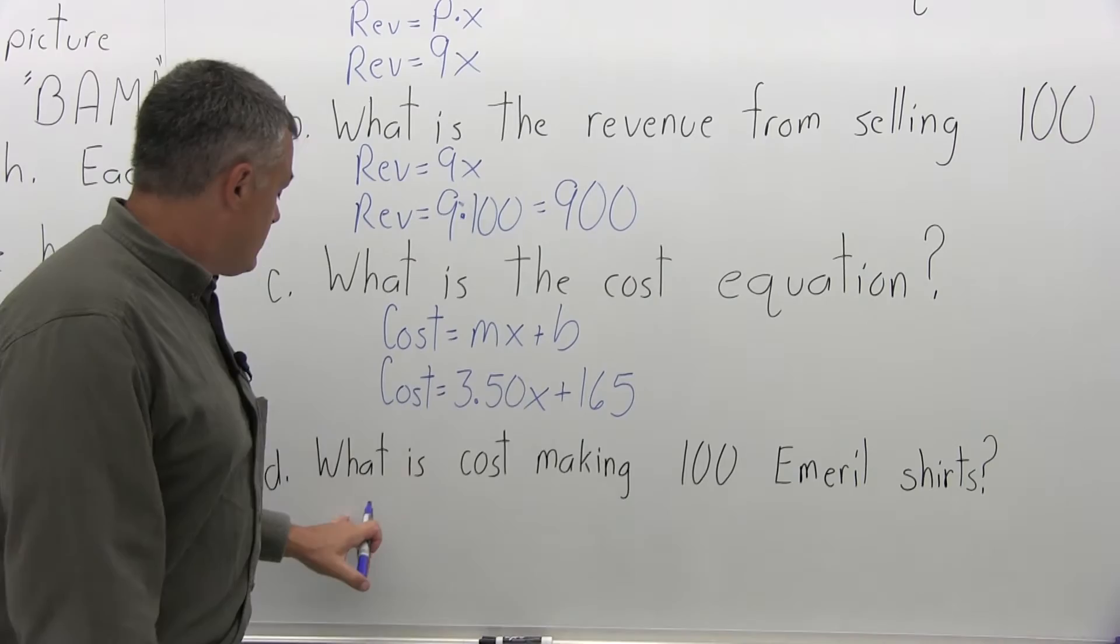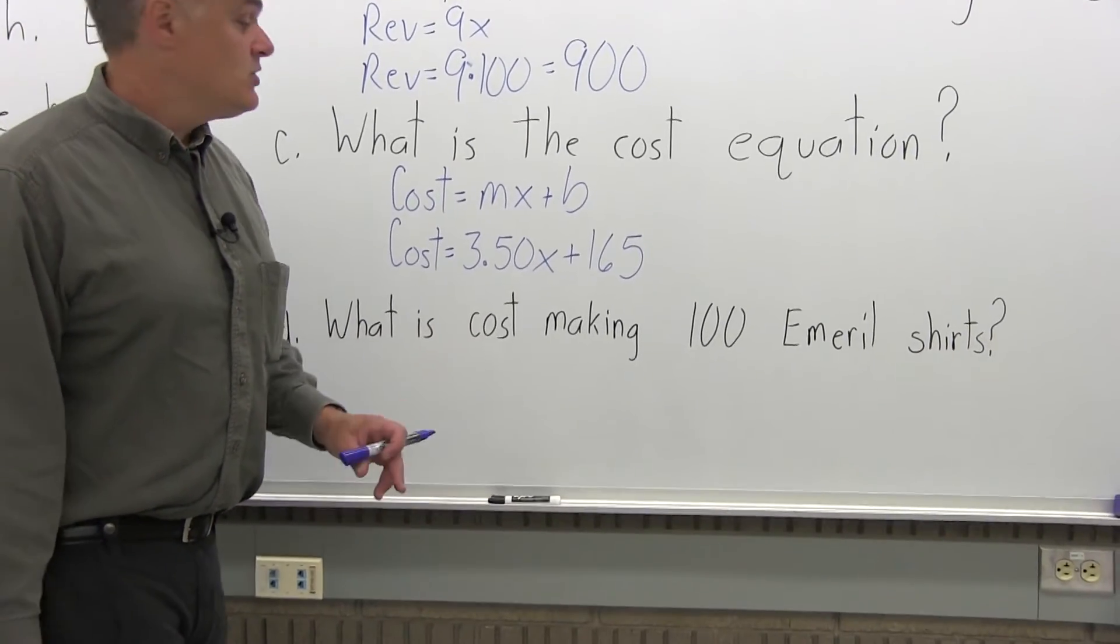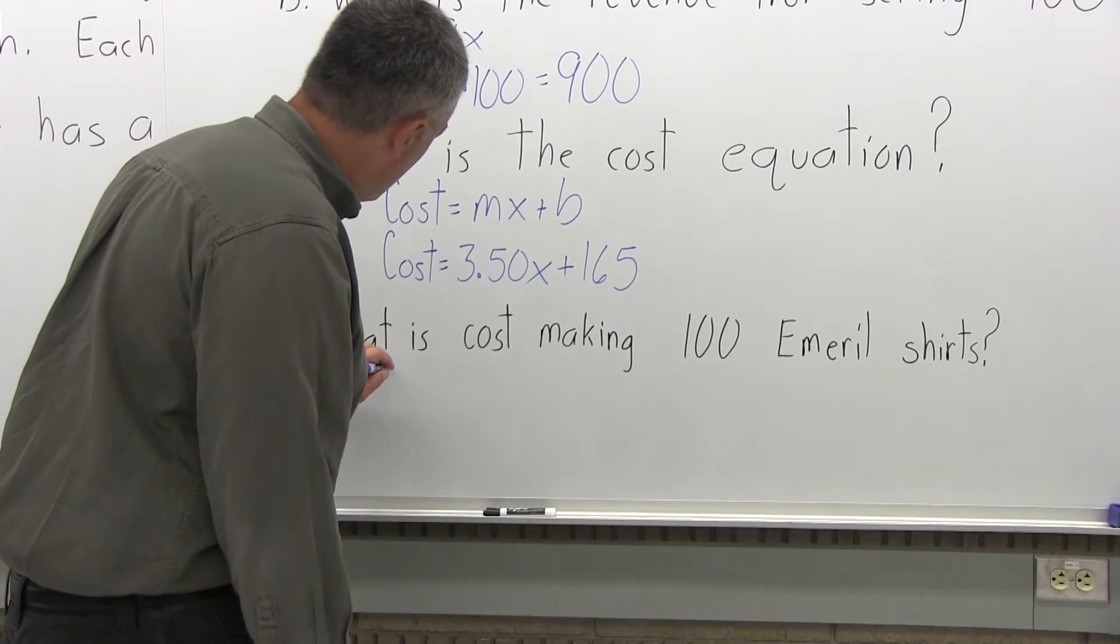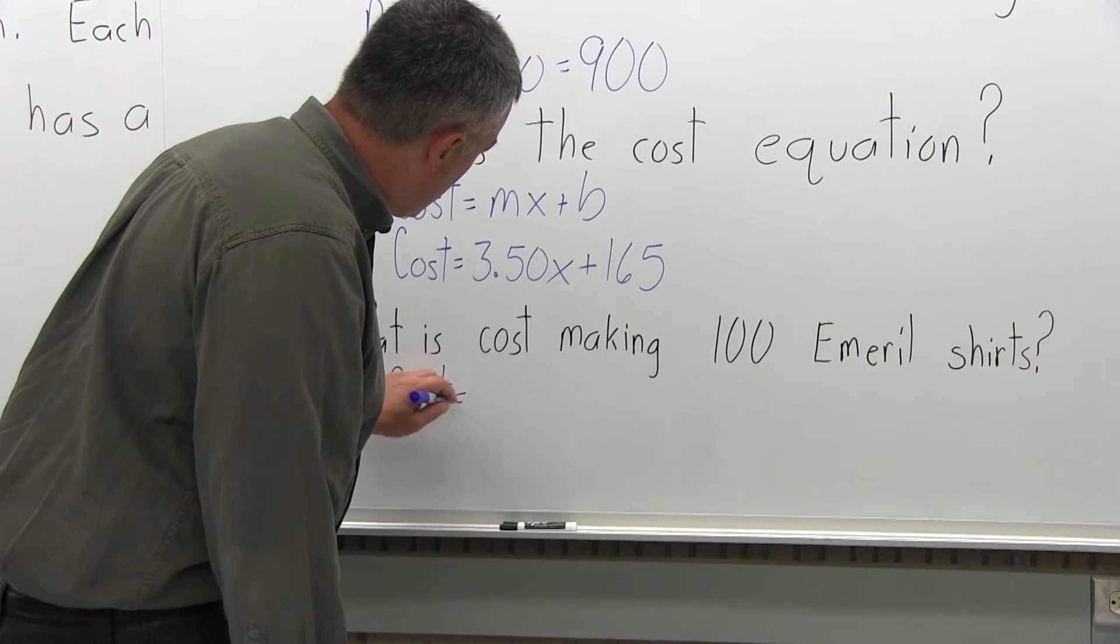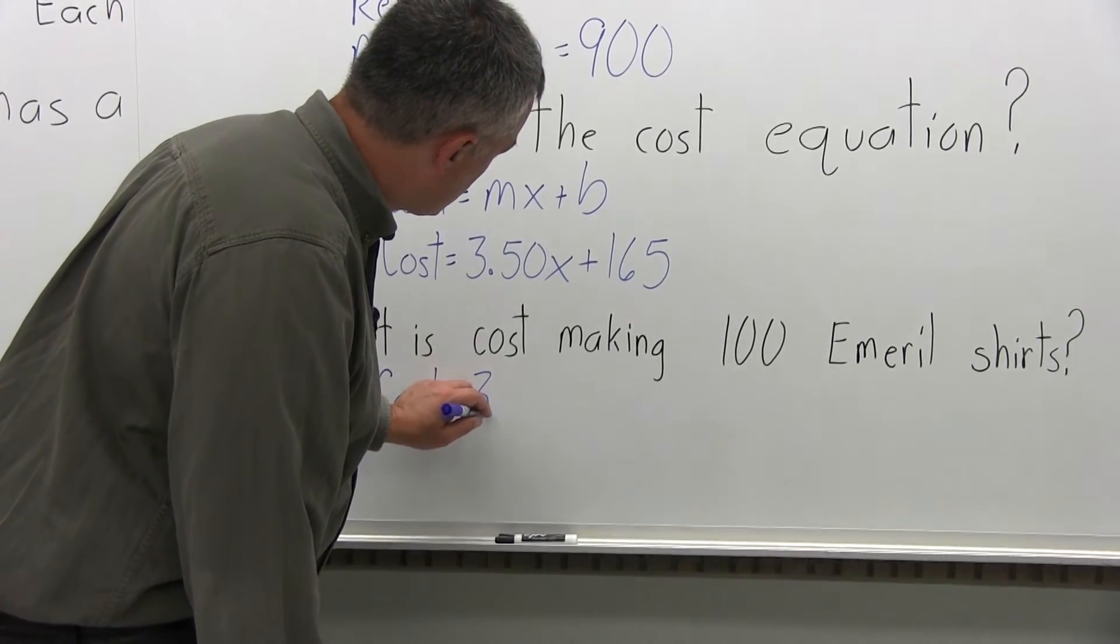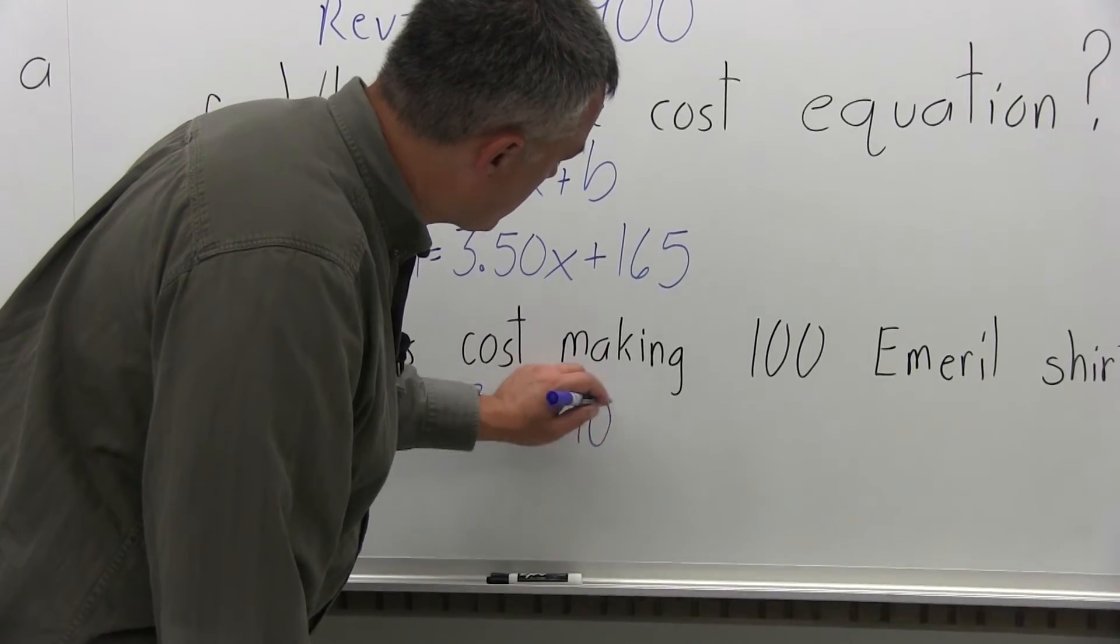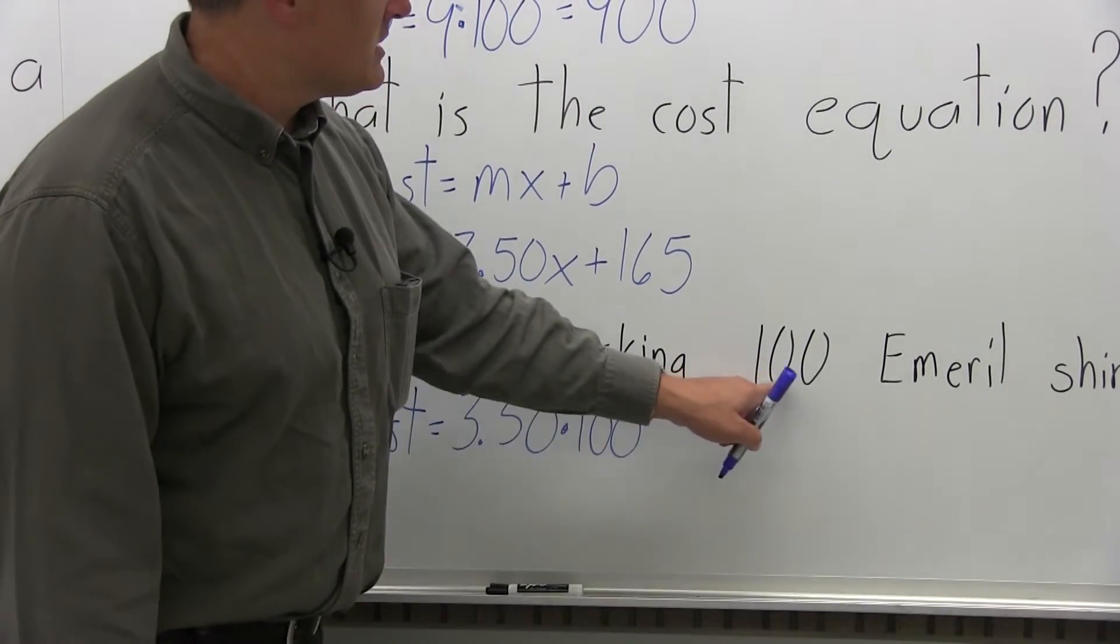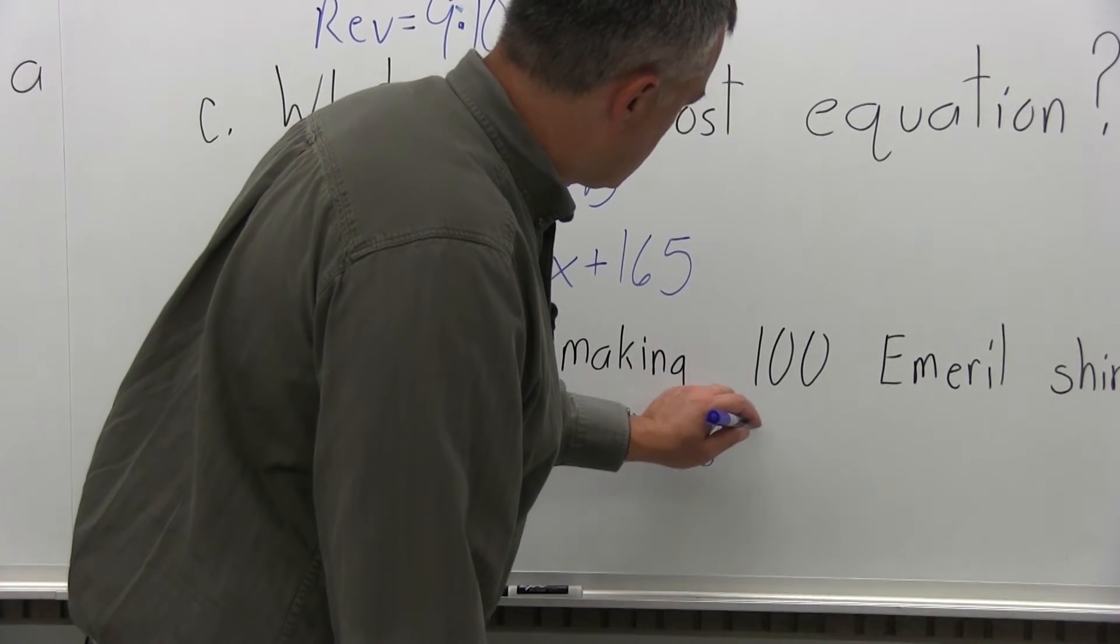And Part D asks specifically, what is the cost to make 100 t-shirts? So what we're going to have to do is put in a value of 100 for X. So take 3.50X and it becomes 3.50 times 100, 100 is the value for X because that's what the question asked about, plus 165.